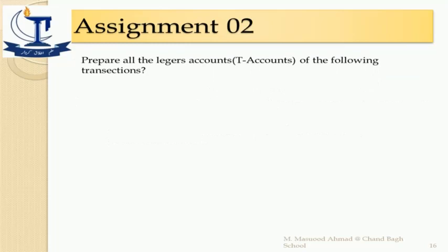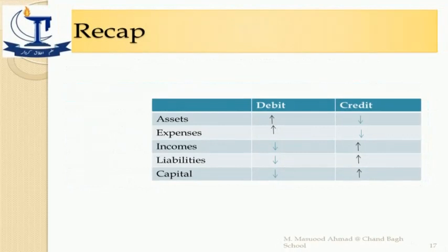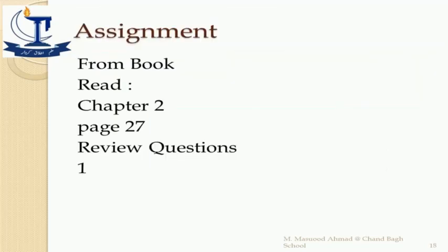Assignment two: prepare all the ledger accounts of the following transactions. You can pause the video and write down all the assignments. Here is a recap once again: assets and expenses — whenever they increase, place on the debit side; whenever they are decreasing, place the value on the credit side. Income, liabilities, and capital — whenever they are increasing, place on the credit side; when there is any decrease, place the amount on the debit side.